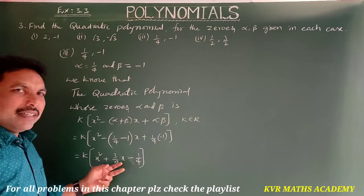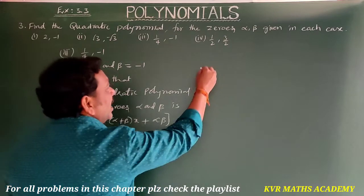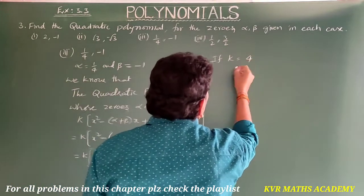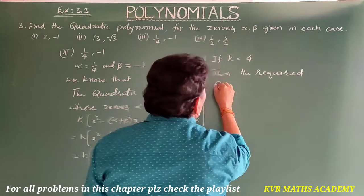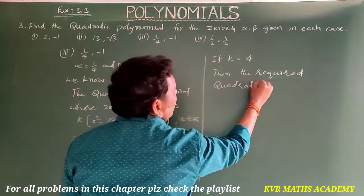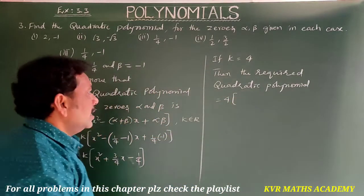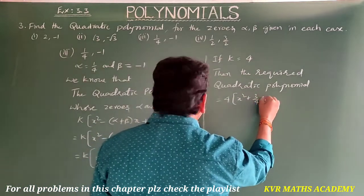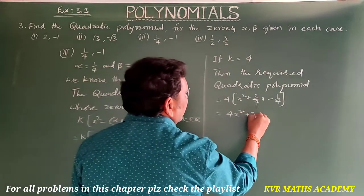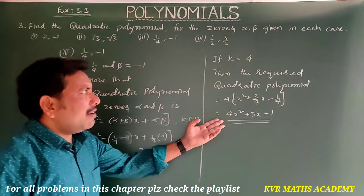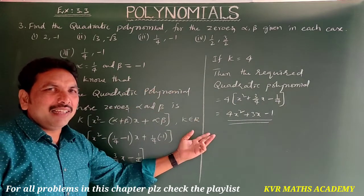Taking k = 4, the required quadratic polynomial is 4 into (x² + 3/4·x - 1/4). Multiplying through, this becomes 4x² + 3x - 1. This is the required quadratic polynomial of zeros 1/4 and -1.